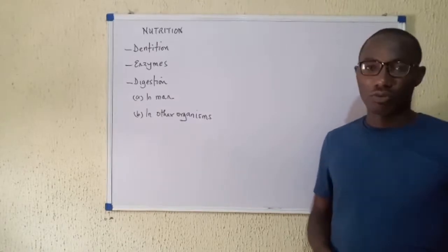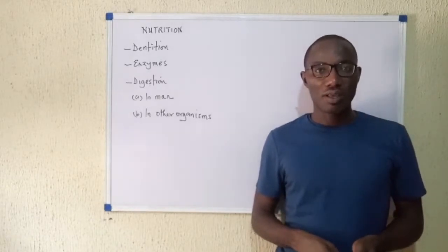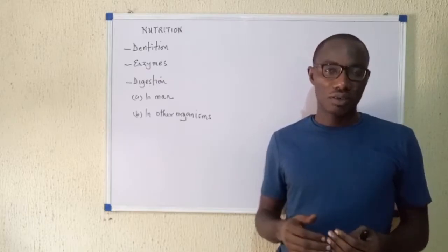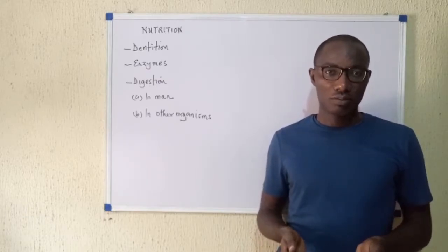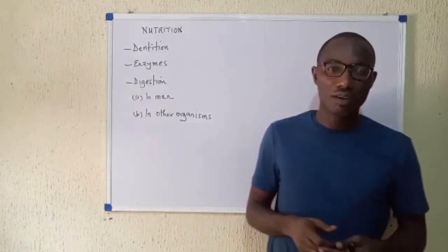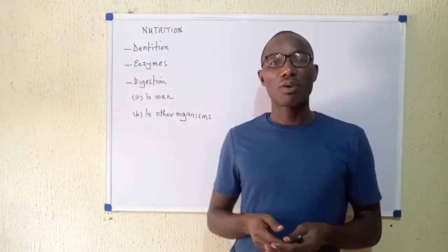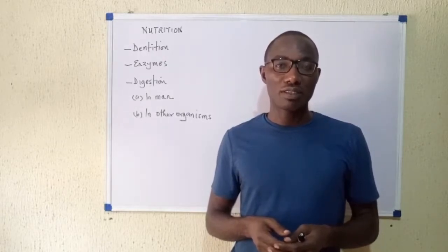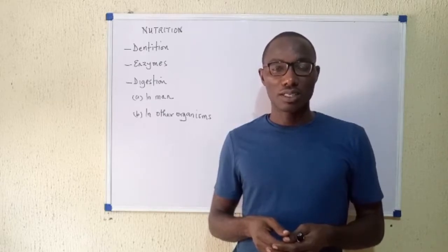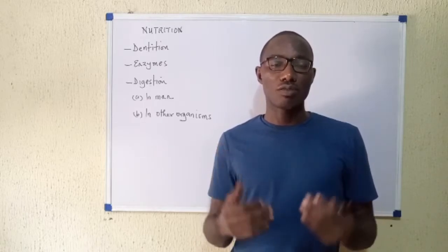Dentition refers to the number of the different types of teeth found in the mouth of an organism, as well as how these teeth are arranged. Typically, teeth are found in different animals — plants do not have teeth — and these animals are mainly vertebrates. However, among the invertebrates it is also possible to find teeth; mollusks such as snails and slugs are known to have teeth in a part of their bodies called the radula.